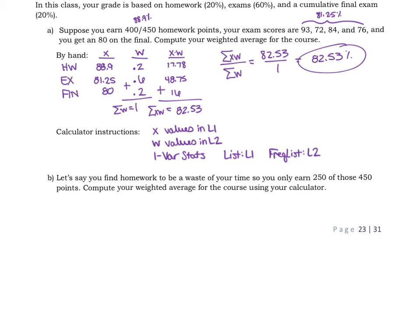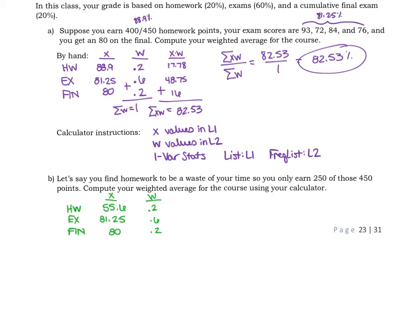Hopefully you got your new homework average at a 55.6. And when you change that 88.9 in your calculator to a 55.6, you will find out now that your course grade, running the same series of steps that we just did, is a 75.87.